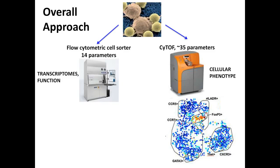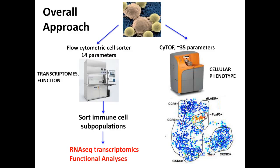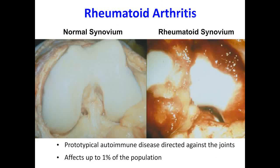Our general approach employs two complementary strategies. We use CyTOF to generate detailed cellular phenotypes in a sample. In parallel, and often in sequence, we use traditional flow cytometry to sort cells of interest. With CyTOF, we analyze the sample in substantial detail to identify subpopulations of immune cells that are expanded or depleted in patient samples relative to controls. Once we've identified populations of interest, we sort them by flow cytometry for additional studies, including RNA sequencing analyses by low-input RNA-seq transcriptomics, single-cell transcriptomics, and functional analyses.